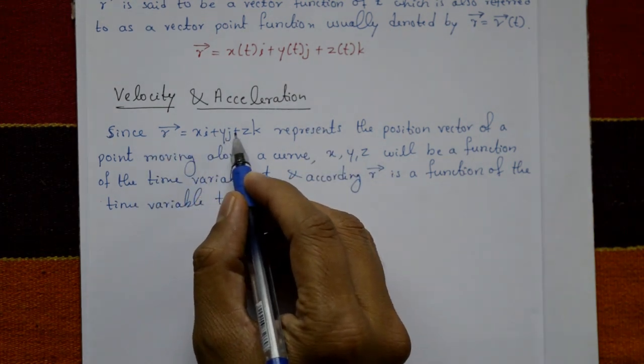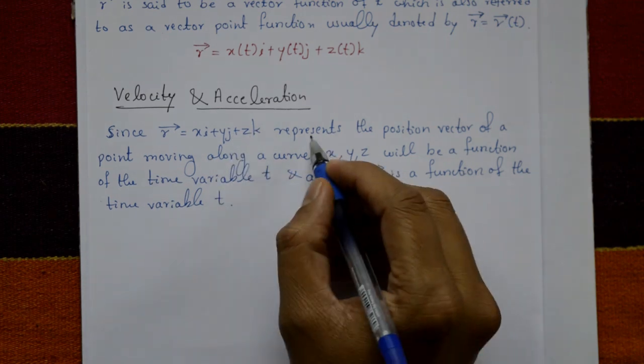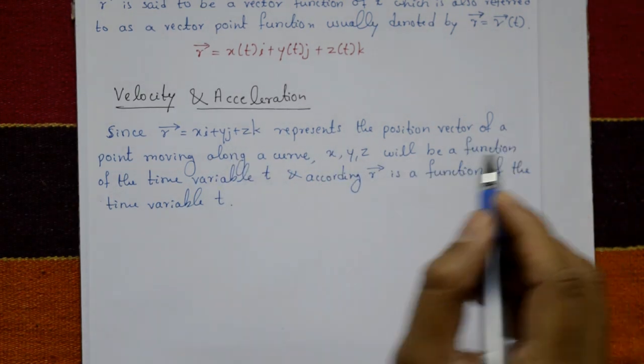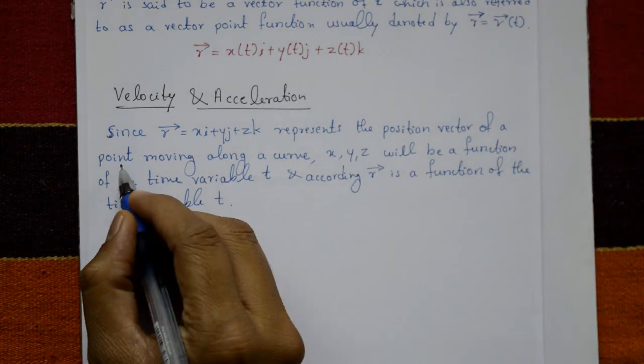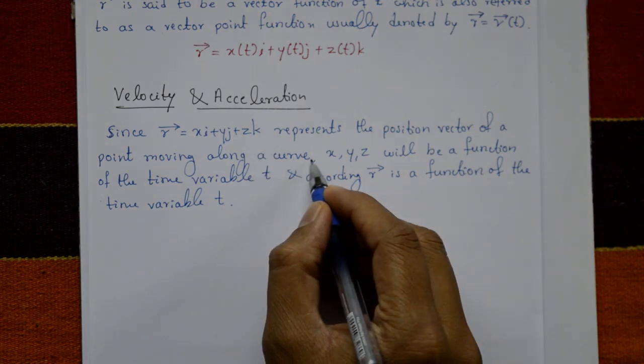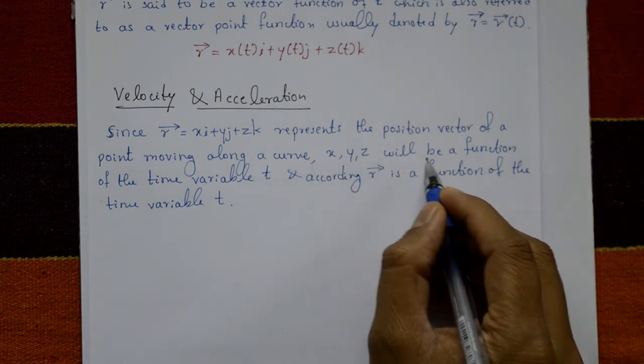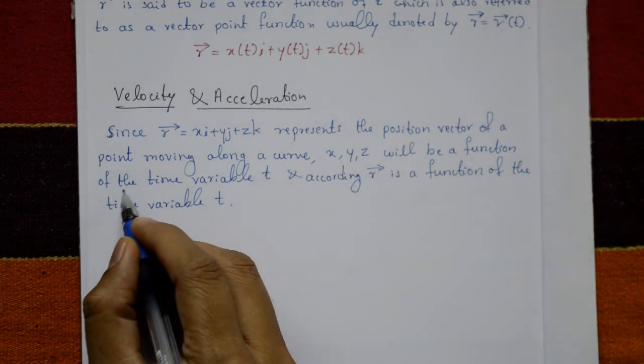Velocity and Acceleration: Since r = xi + yj + zk represents the position vector of a point moving along a curve, x, y, z will be functions of the time variable t, and accordingly r is a function of the time variable t.